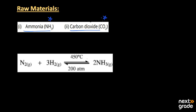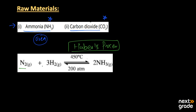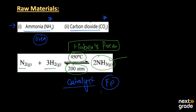The ammonia used as a raw material for urea production is obtained through the Haber process. In this process, nitrogen reacts with hydrogen at a temperature of 450 degrees Celsius and a pressure of about 200 atmospheres. The reaction takes place in the presence of an iron catalyst, and the product is ammonia, NH₃.